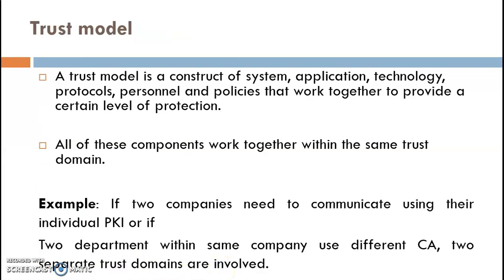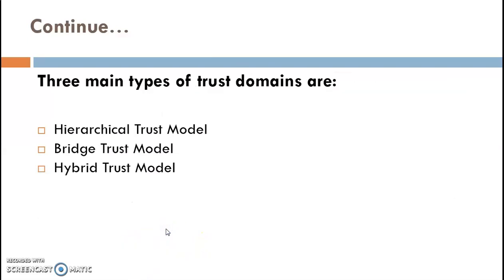A trust model is a construct of a system, application, technology, protocol, personnel, and policies that all work together to provide a certain level of protection. All these components work within the same trust domain. For example, if two departments within the same company or two different companies want to communicate using different CAs, two separate trust domains are involved. If they use the same CA, they share the same trust domain. There are mainly three types of trust models: hierarchical trust model, bridge trust model, and hybrid trust model.